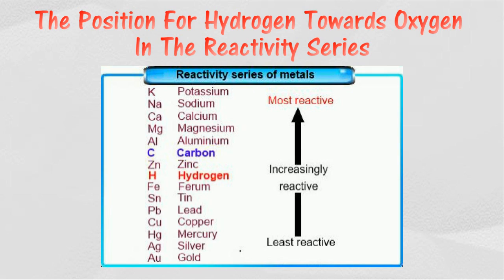Hydrogen is located between zinc and iron in the reactivity series of metals. Elements that are more reactive compared to hydrogen, such as potassium, sodium, magnesium, and zinc, can reduce water or steam to hydrogen. Elements that are less reactive than hydrogen are unable to react with water or steam.